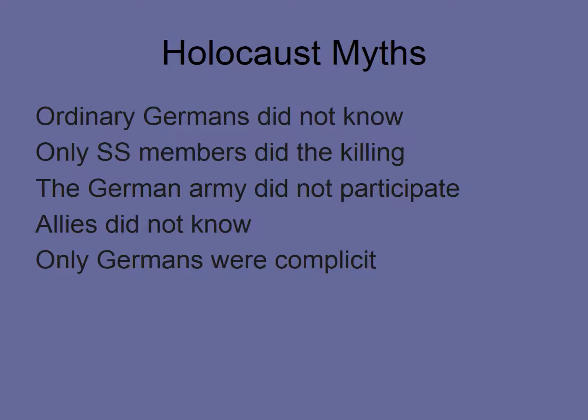Another myth is that only Germans were complicit. That's also not true. There were a number of different countries that became allies of Germany and were ultimately complicit in the Holocaust — countries like Romania, for example, who fought with the Germans around the city of Stalingrad. So these are some of the predominant Holocaust myths — probably the most common misunderstandings.